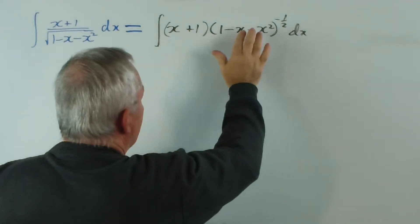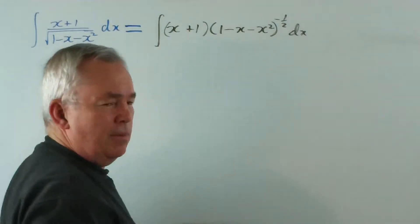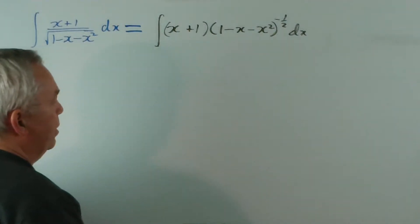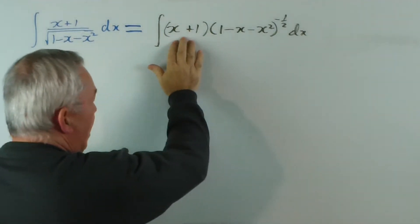And let's inspect this. If this was the derivative of that, we would, in fact, have a wonderful chain rule and be able to solve it very quickly or evaluate it quickly. But it's not exactly the derivative.